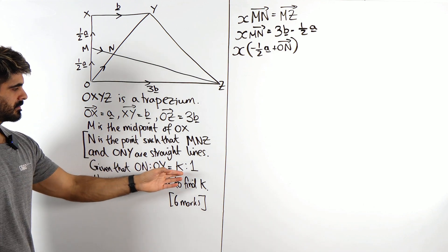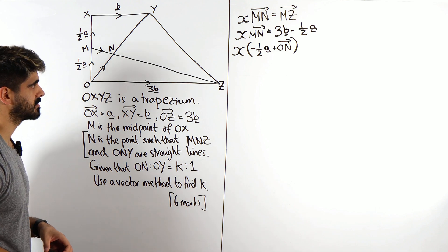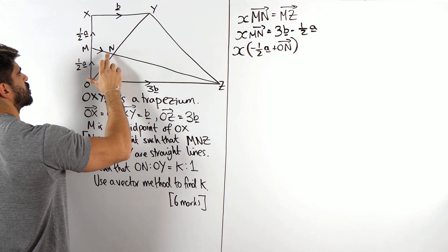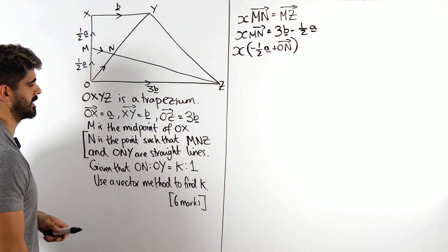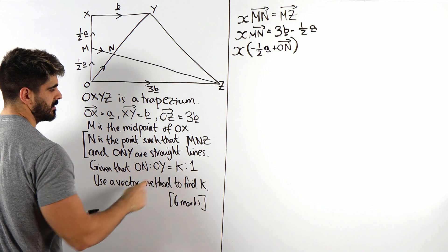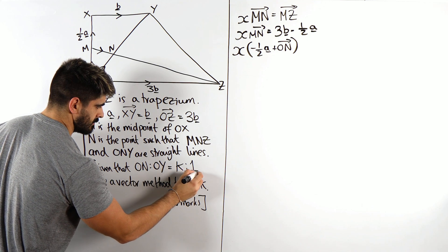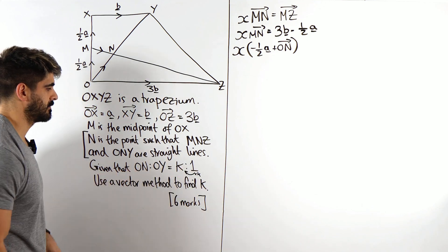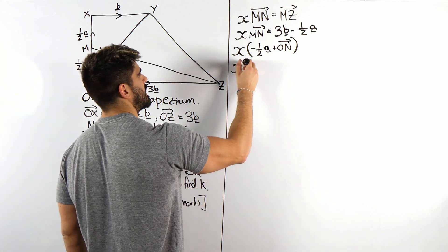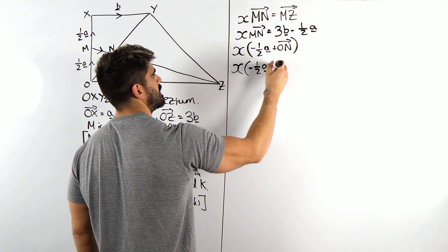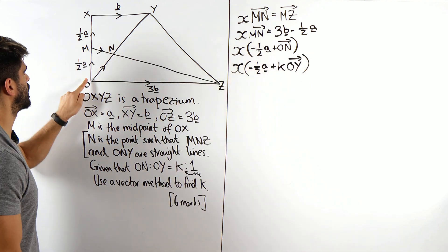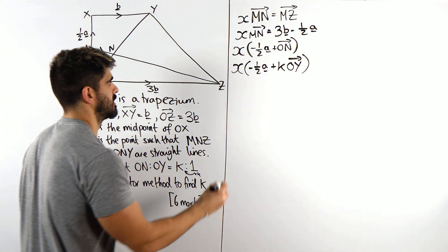Now, here we can use this to help us find what O to N is. And it's going to be in terms of K. This is some fraction of O to Y. And it's saying it's K. So that distance O to Y, if you times it by K, we get the O to N. So O to N is K lots of O to Y. So we get X lots of minus a half A plus K lots of O to Y. Now, what is O to Y? Well, it's A plus B. That's a really nice one.